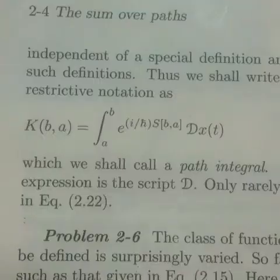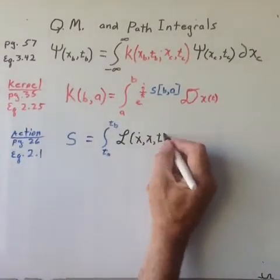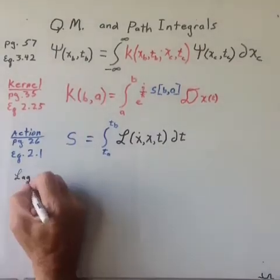The action is then given by the time integral of the Lagrangian, and in this problem the Lagrangian is just the kinetic energy minus the potential energy as shown.